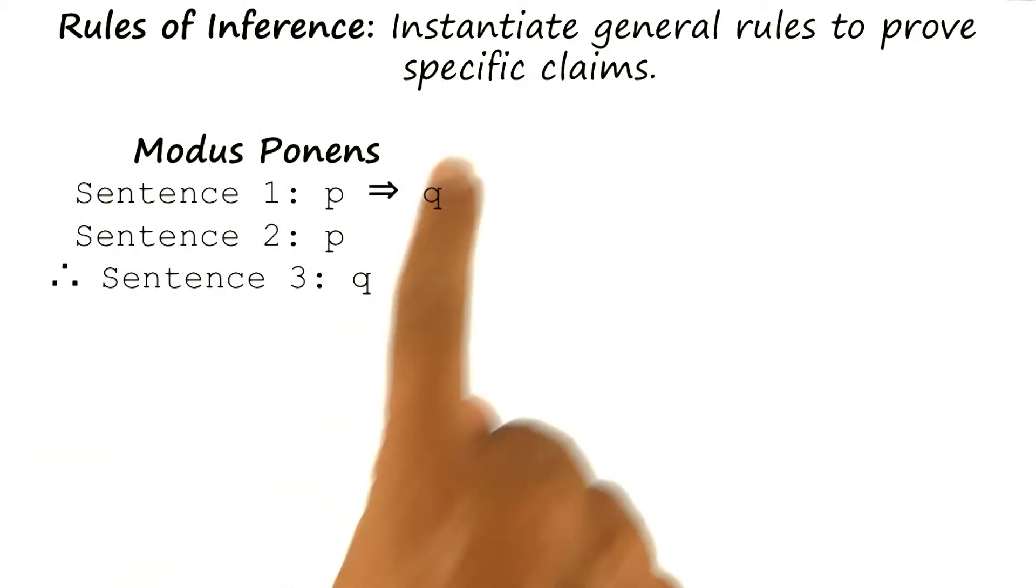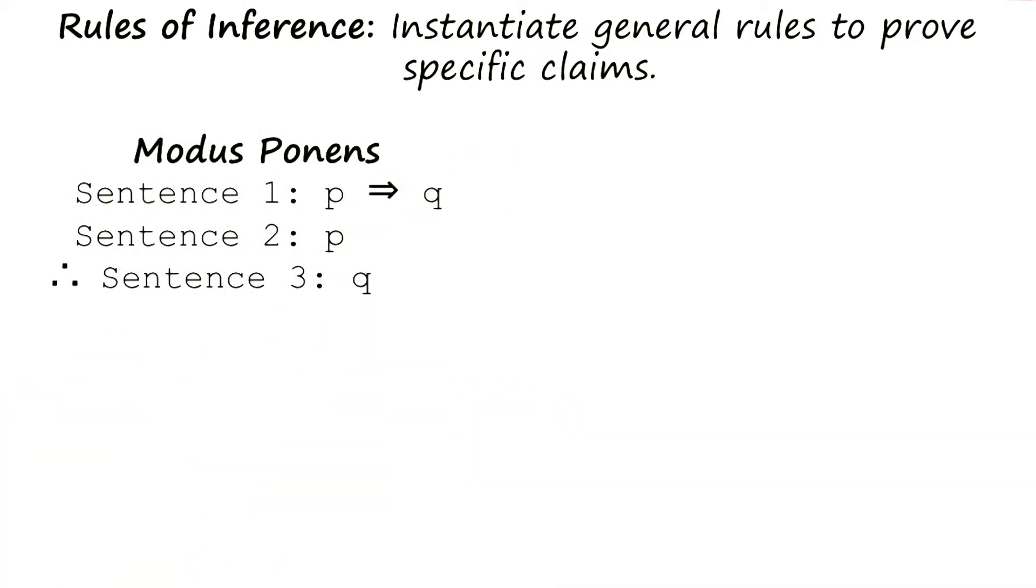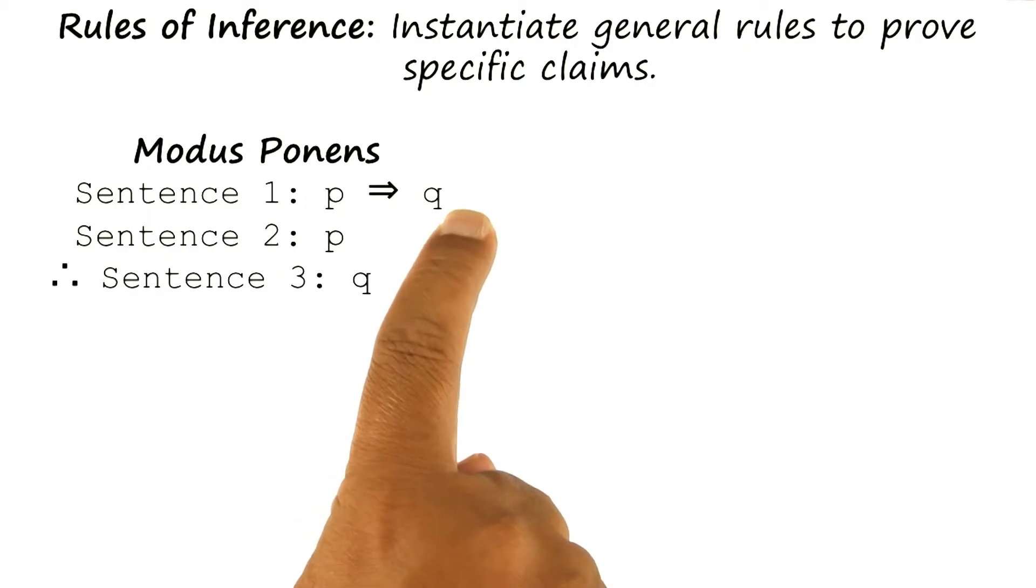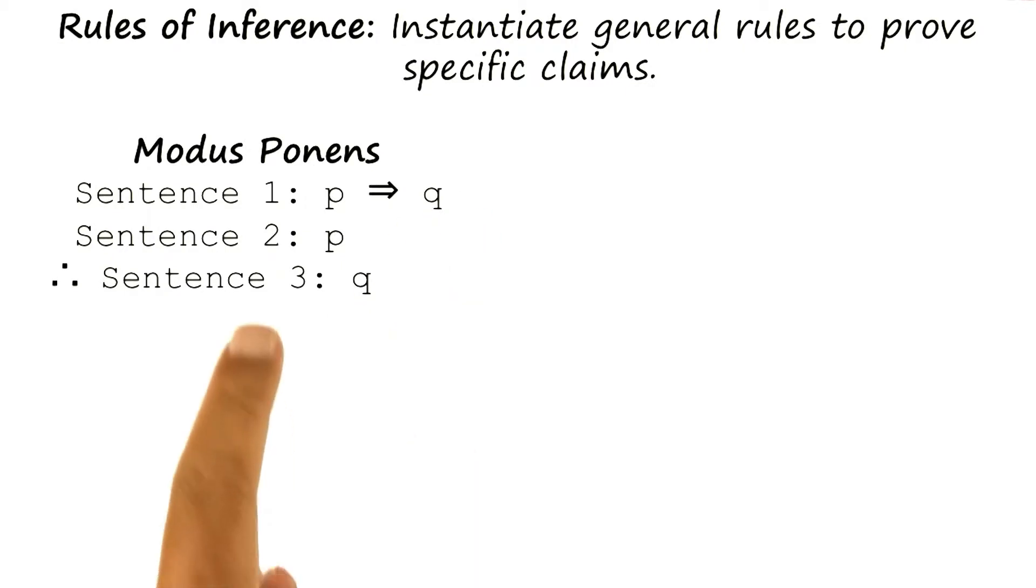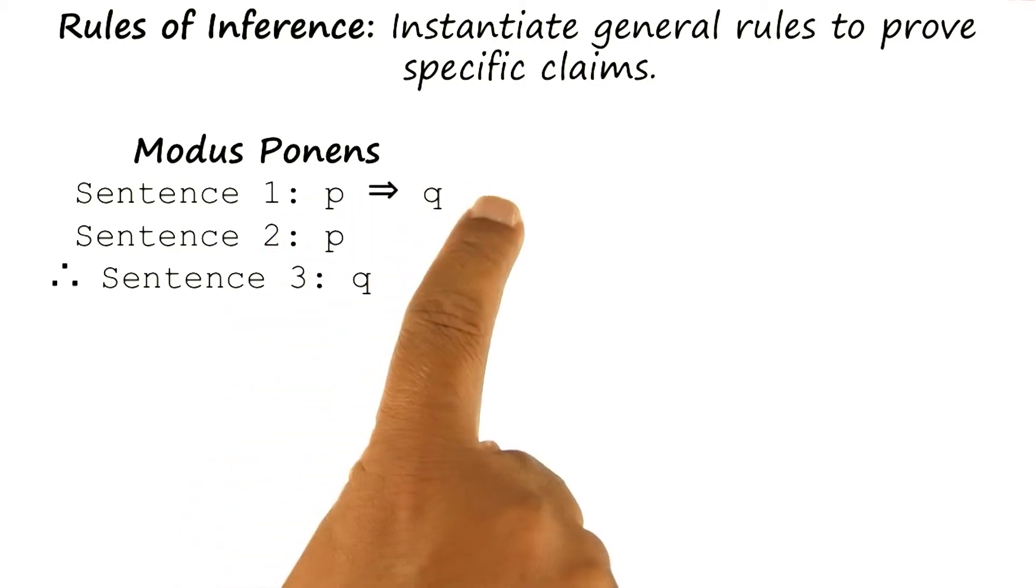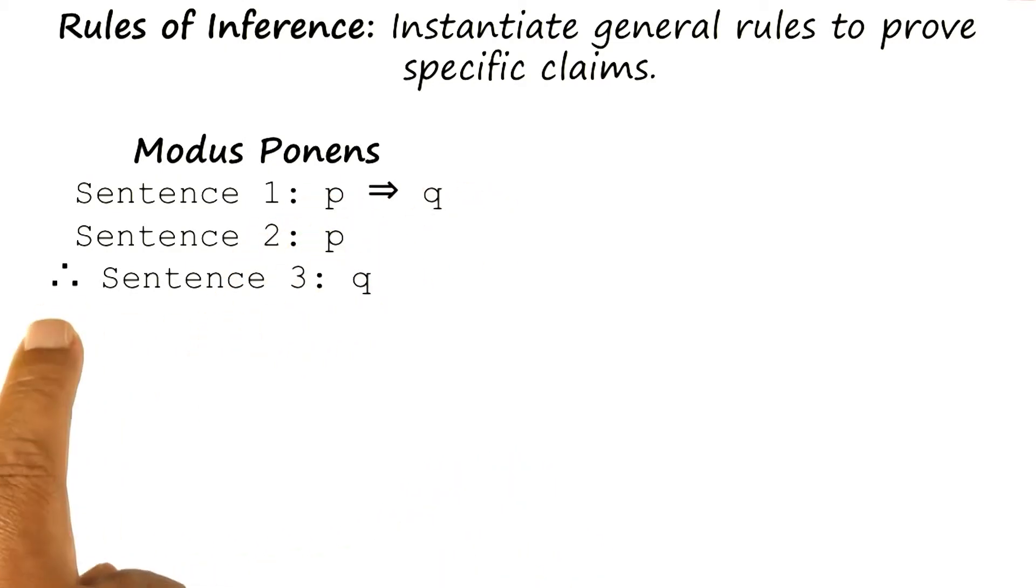One rule of inference is called modus ponens, and many of you may already be familiar with it. If I'm given a sentence S1 which says p implies q, and another sentence S2 which says p, then I can infer q from it. P implies q and p, therefore q. This symbol stands for therefore.